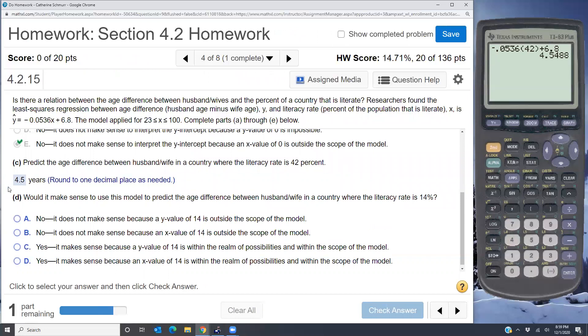Would it make sense to use this model to predict the age difference between husband and wife in a country where the literacy rate is 14%? Well they already tell us the scope of this model is 23 to 100 for the x. So an x value of 14 is outside the scope of the model.